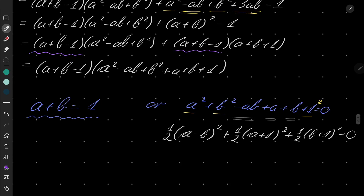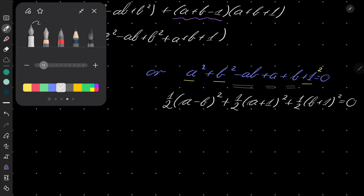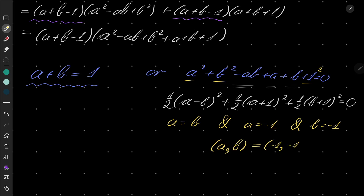Now look — here we have three squares which should equal 0. That can only happen under one circumstance: a must equal b, a must equal minus 1, and b must equal minus 1, which is of course satisfied by a equals b equals minus 1.